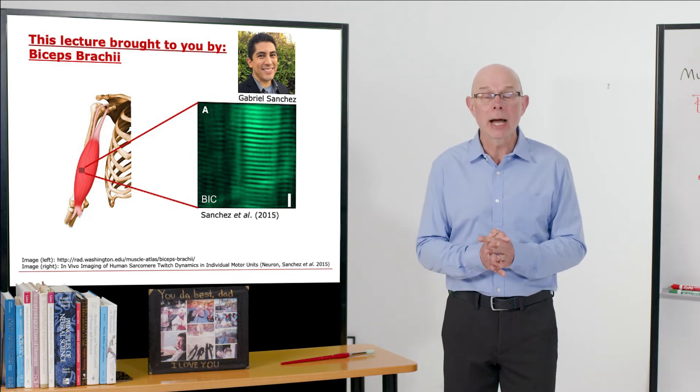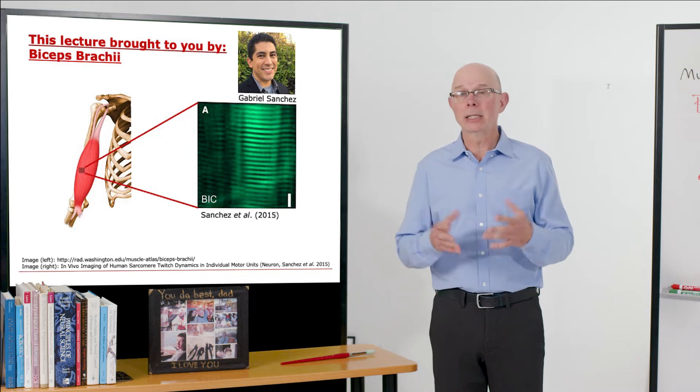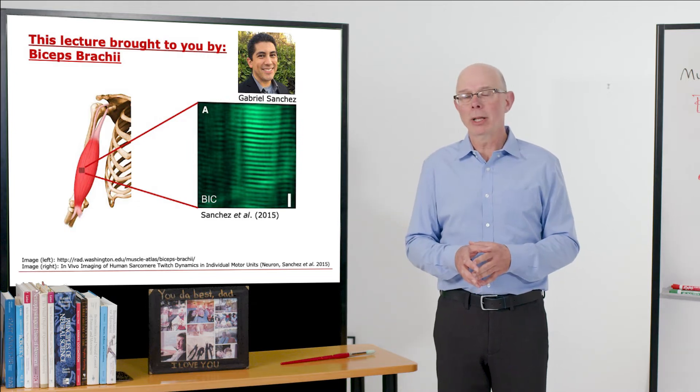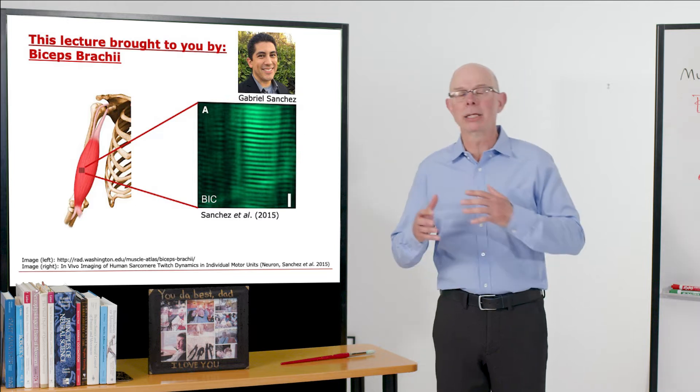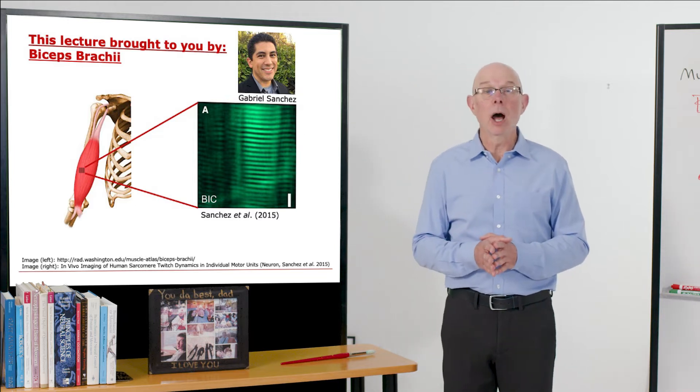But why biceps brachii? Well, it turns out we also have a biceps femoris in our leg, so we call it biceps femoris for the leg, biceps brachii for the upper extremity.